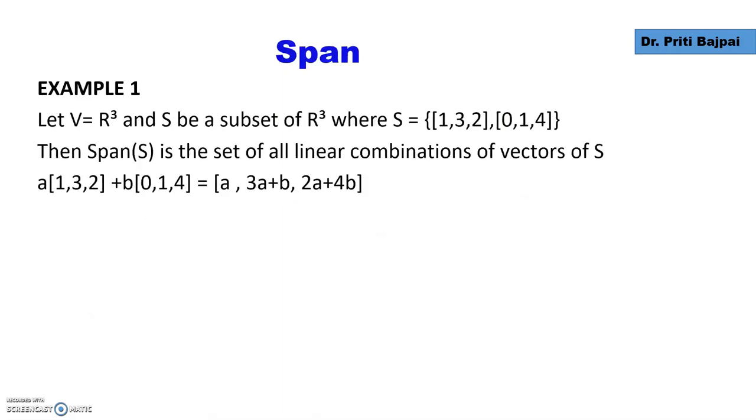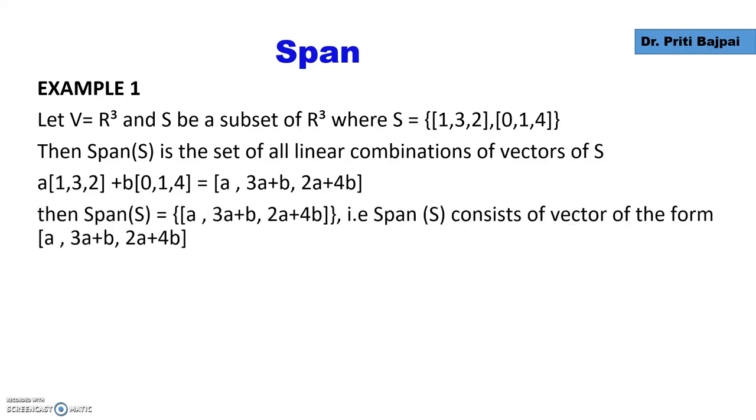Let's see some examples. We are given in this example a vector space R³ and we take a subset S = {[1,3,2], [0,1,4]}. Then the span of S is the linear combination of these two vectors. If we write the linear combination as a times the first vector plus b times the second vector, we get the vector [a, 3a+b, 2a+4b]. So span S is all vectors of this type.